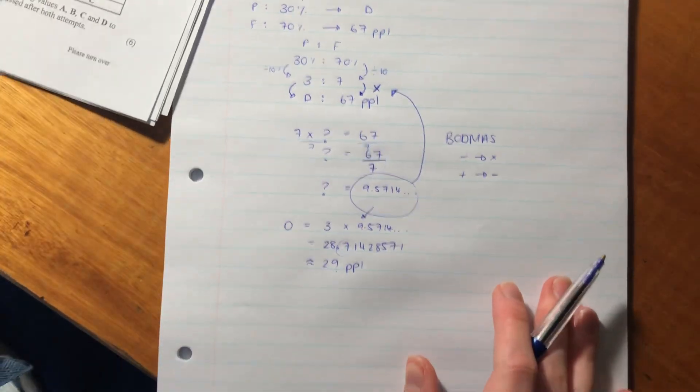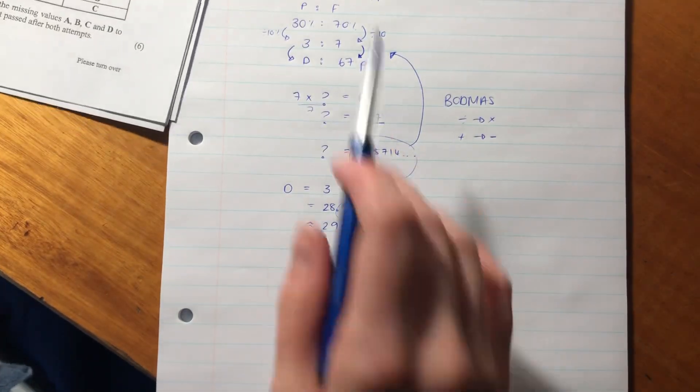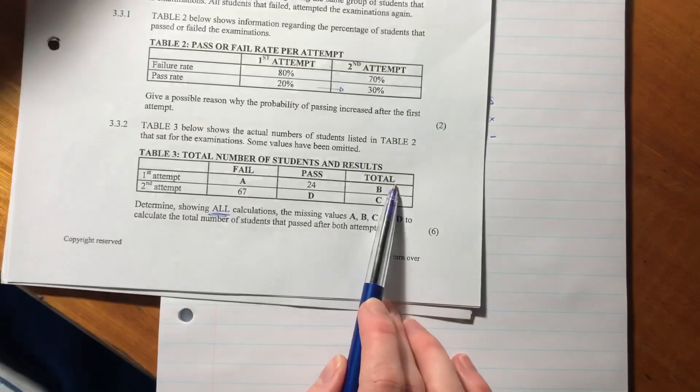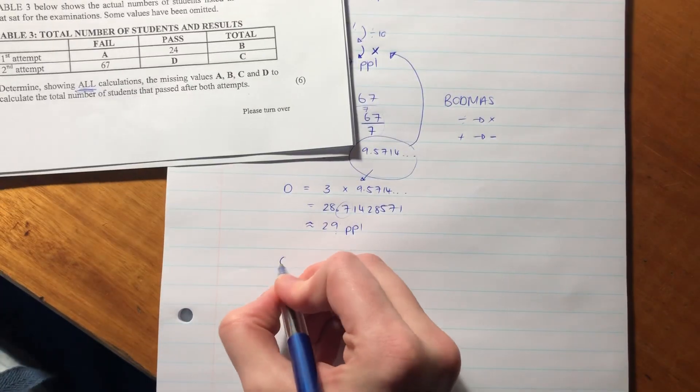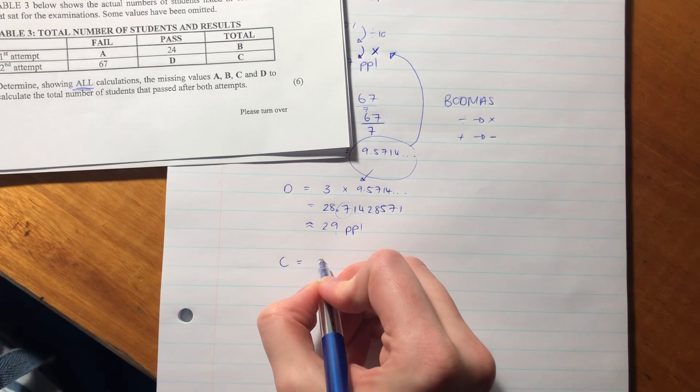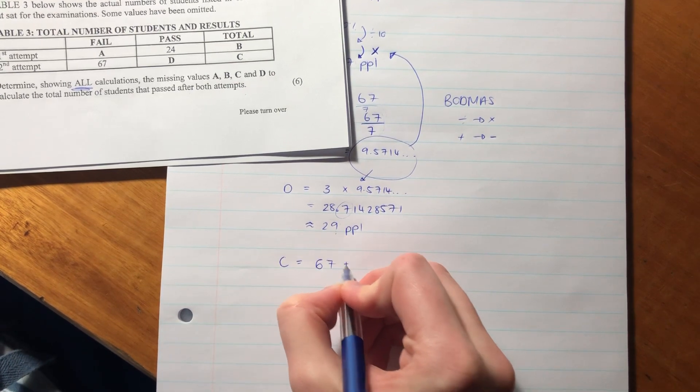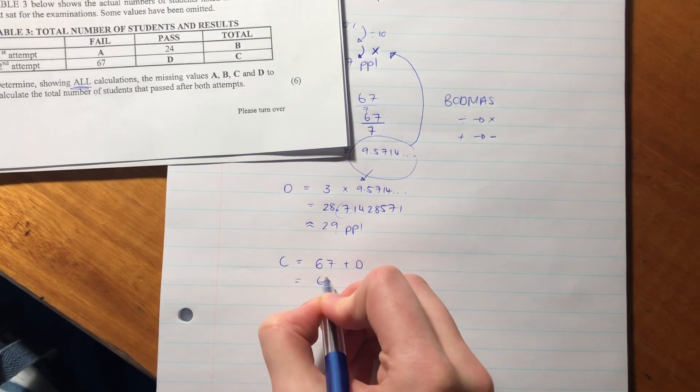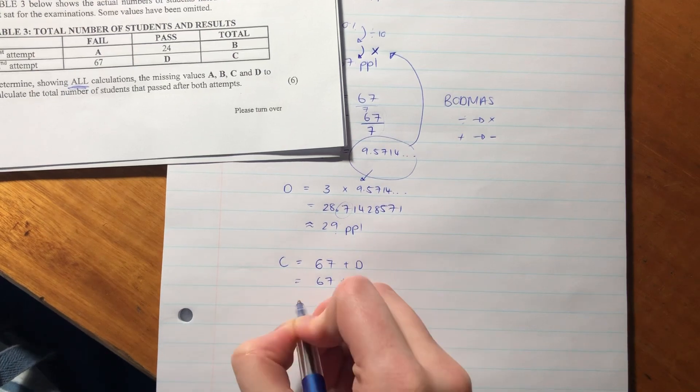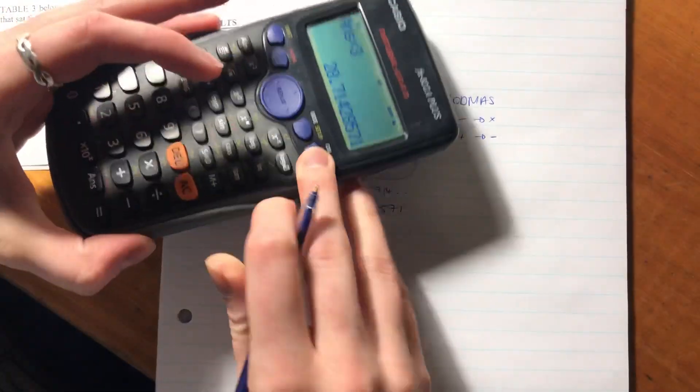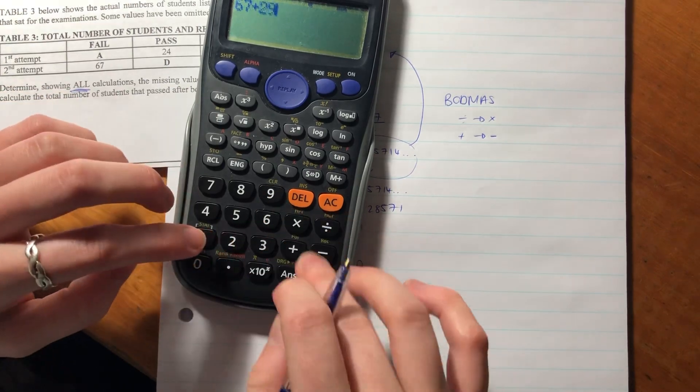29 passed the second time and 67 failed. We've got A, we've got B, we've got D. We know that C equals 67 plus D, which is 67 plus 29. Put that into our calculator: 67 plus 29 is 96 people.